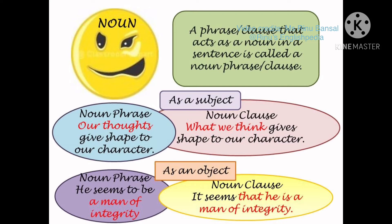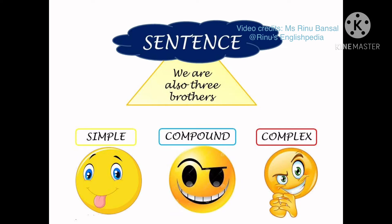The third type is the noun phrase or clause, which acts as a noun and can appear in the subject or object position. Example as subject: our thoughts give shape to character — our thoughts is the noun phrase; what we think gives shape to character — what we think is the noun clause. As object: he seems to be a man of integrity — a man of integrity is the noun phrase; it seems that he is a man of integrity — that he is a man of integrity is the noun clause.